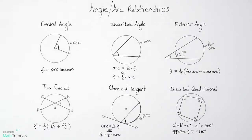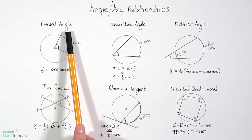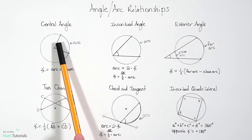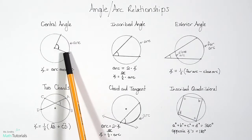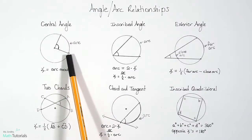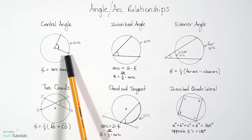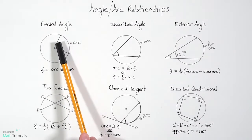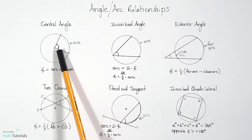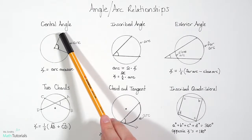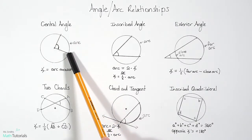The first angle-arc relationship we're going to talk about is a central angle. When we have an angle that goes to the center of the circle and then out — kind of like a piece of pie — we have its degree measure, highlighted here with the little arc, and then we have the arc measure out here.